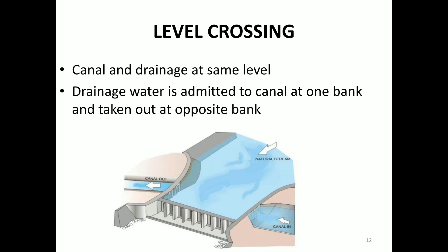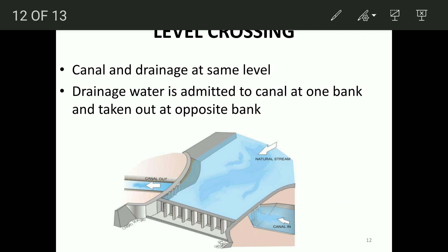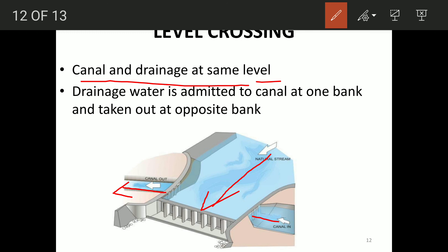The next and last type is the level crossing. In a level crossing, the canal and drainage are at the same level, with the canal full supply level and stream level being equal. This structure allows flow interchange at the same elevation.